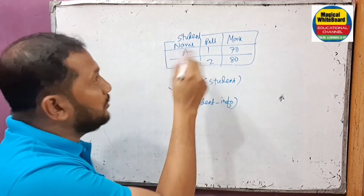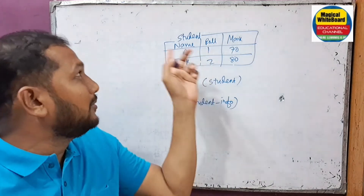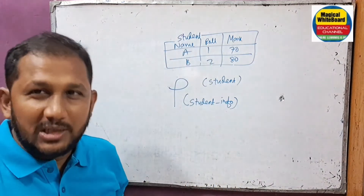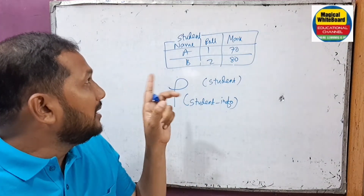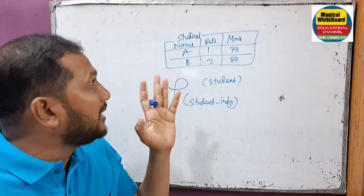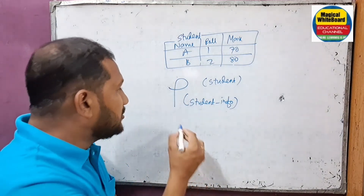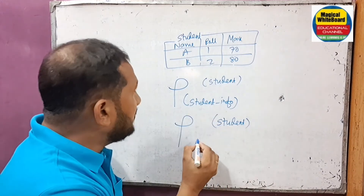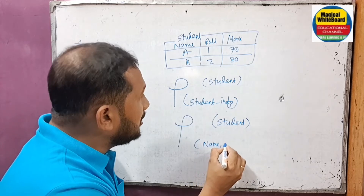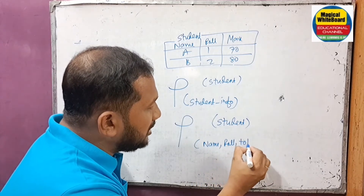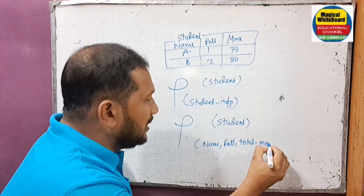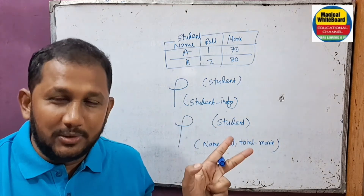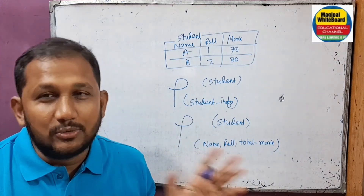It has renamed the table with the new name 'student-info.' This is a syntax example. We also want to rename the attribute 'marks' to 'total marks.' The attribute marks will be renamed to total marks.